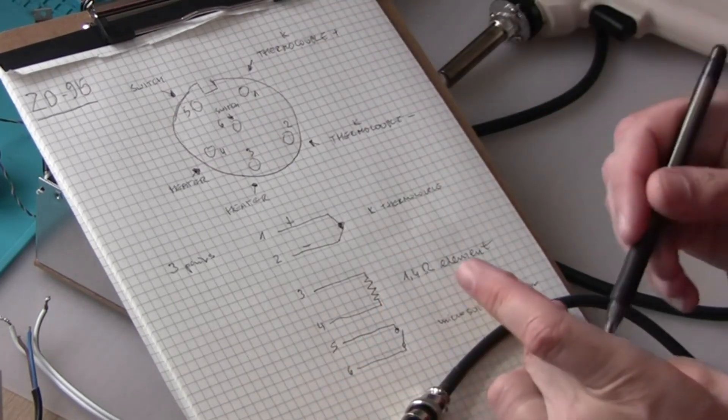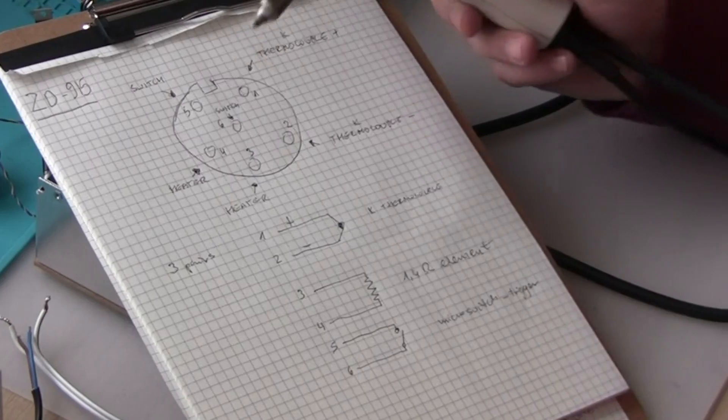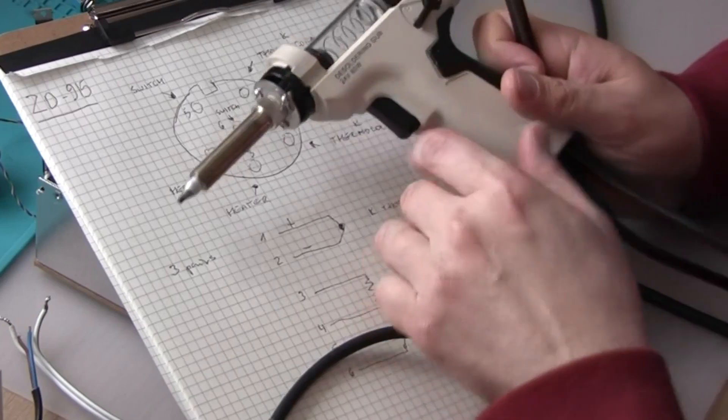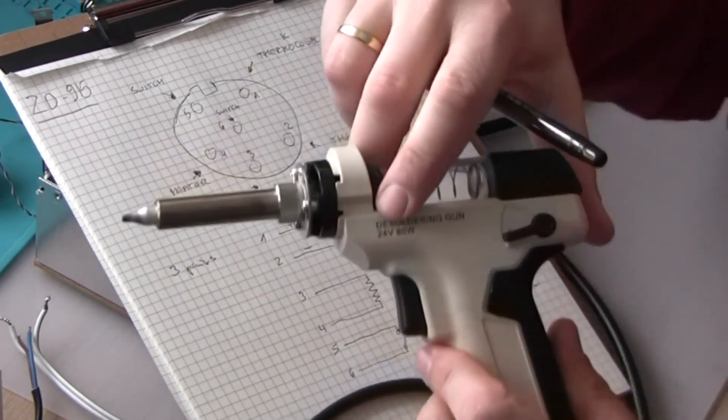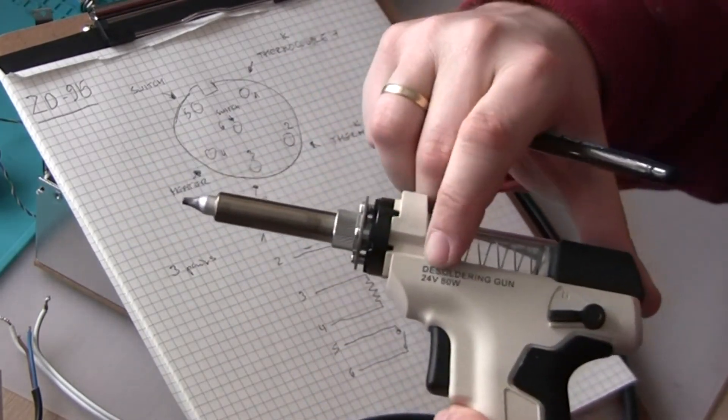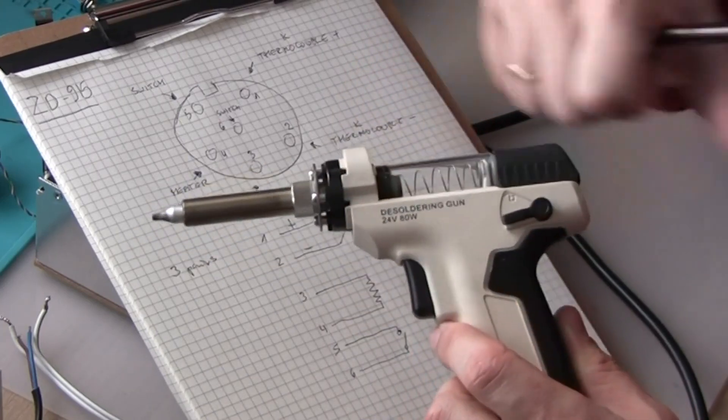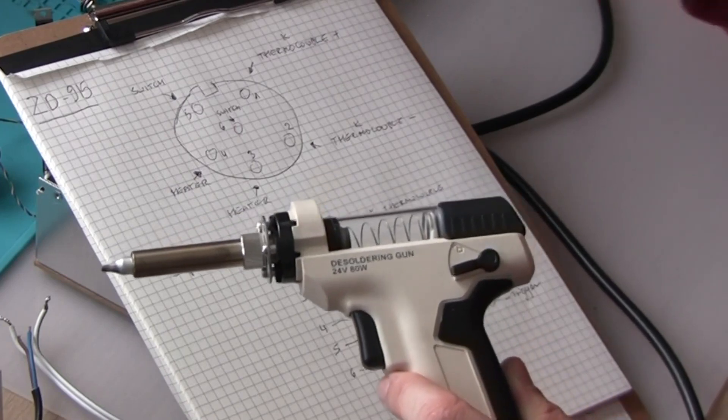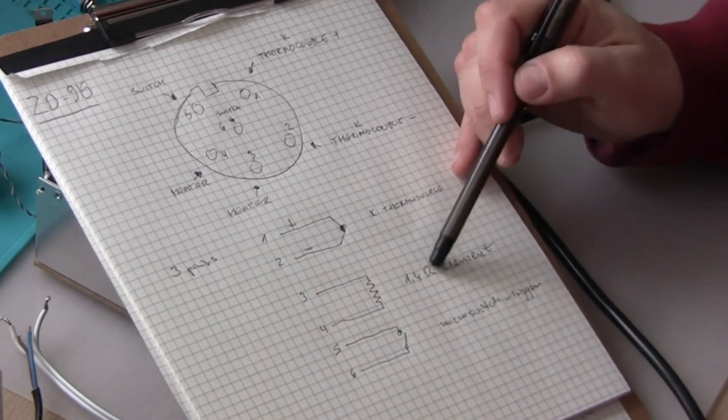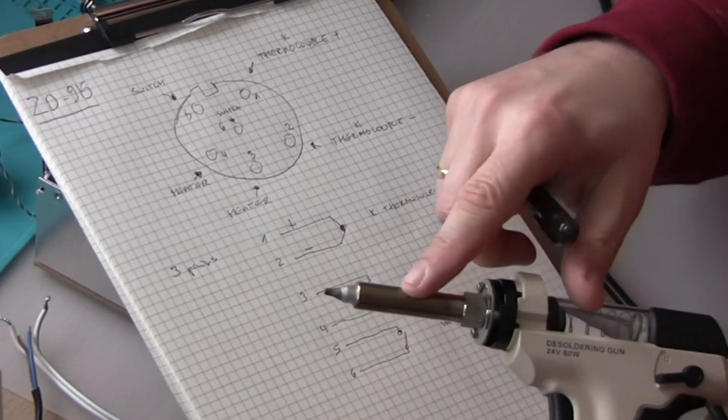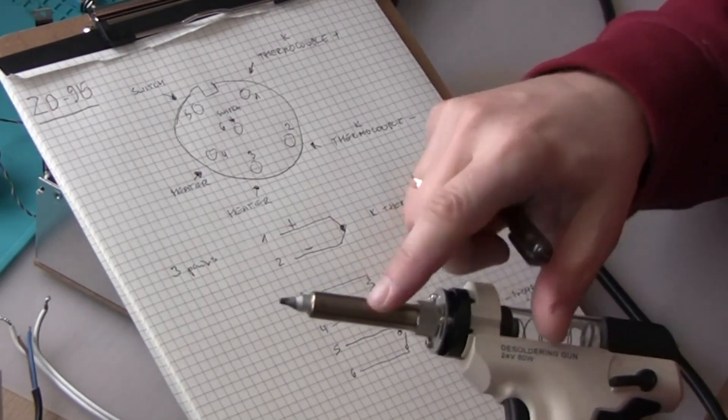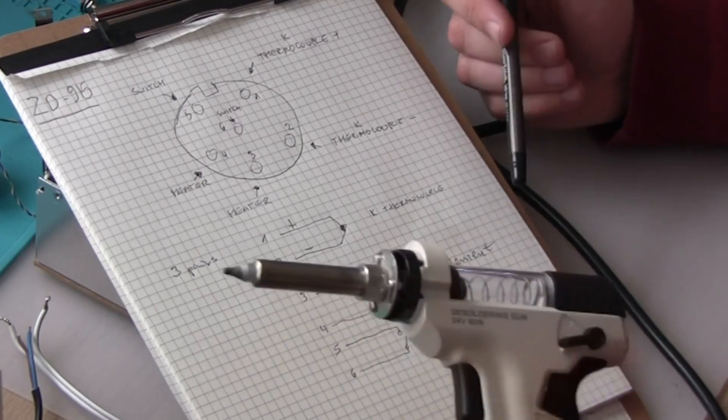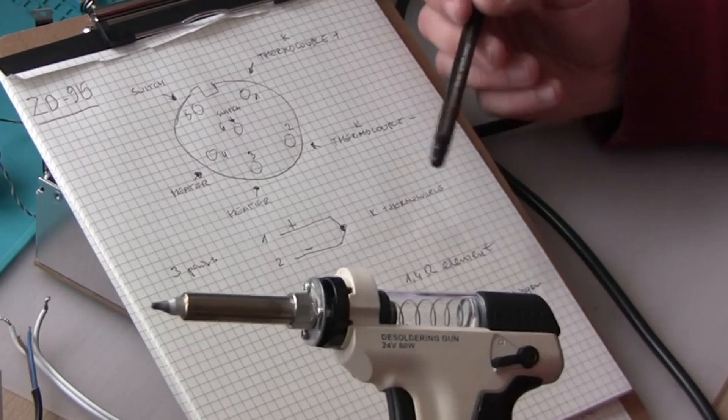Now as we know already from other sources, this gun despite being 24 volts and 80 watts, in fact it works best from 18 volts. There is a 1.4 ohm element, so it's quite low resistance heating element inside, comparing to other irons where you probably have something about 12 ohms cold.